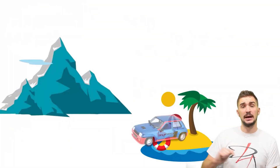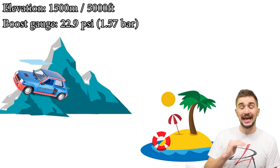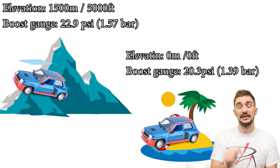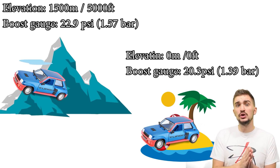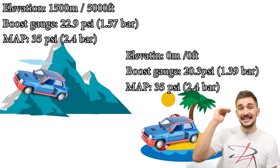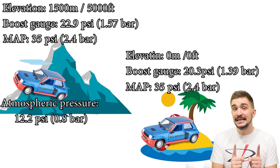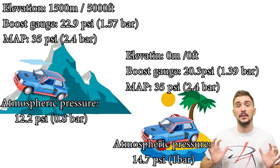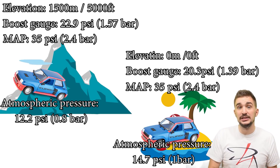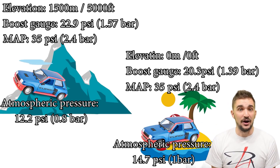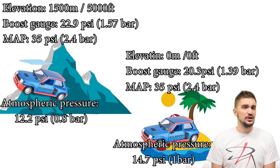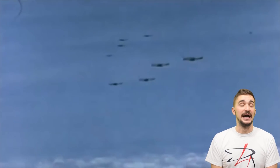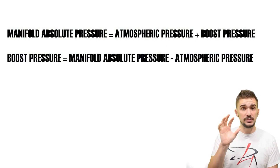If you were to drive your forced induction car to a higher elevation, your boost gauge would actually show a higher value at that higher elevation than at sea level. But your MAP sensor feeding data to your ECU from your intake manifold would show the same overall pressure. Why? Because air is less dense and there's less pressure at the top of a high mountain, meaning the turbocharger or supercharger needs to work harder to generate more air pressure to make up for the reduced atmospheric pressure. This was actually the original intent of turbochargers — they were developed to help airplanes keep making power at higher altitudes. So: manifold absolute pressure equals atmospheric pressure plus boost pressure, and boost pressure equals manifold absolute pressure minus atmospheric pressure.